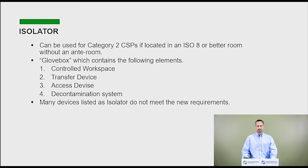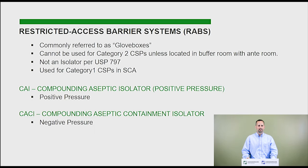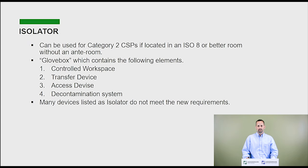One problem is that there are a lot of CACIs and other glove boxes on site right now that have 'isolator' written on them — the compounding aseptic containment isolator has 'isolator' right in the name — which can be really confusing when reusing existing equipment. If you want to use a glove box in an area that is not a true full clean room, it needs to be classified as an isolator. You need to verify with the manufacturer that it truly meets all the requirements of USP 797 for an isolator.